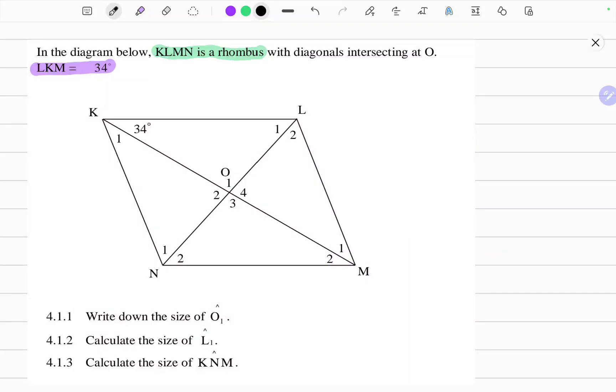Good day math fam, welcome to another lesson. Today we're going to look at quadrilaterals and more specifically the properties of a rhombus. In the question we're given that KLMN is a rhombus with diagonals intersecting at O. Also angle LKM equals 34 degrees.